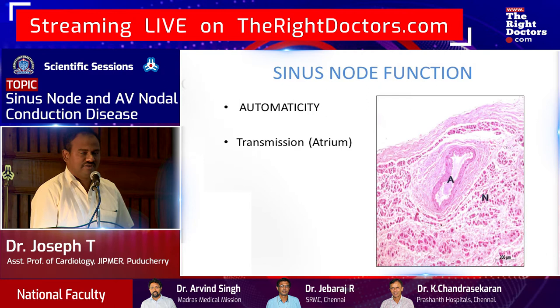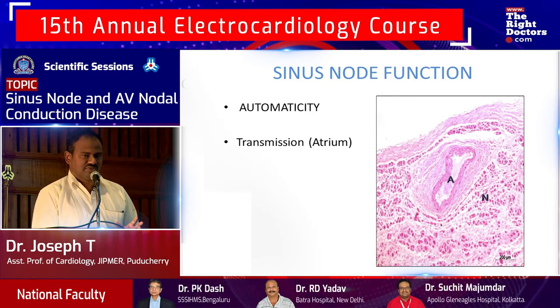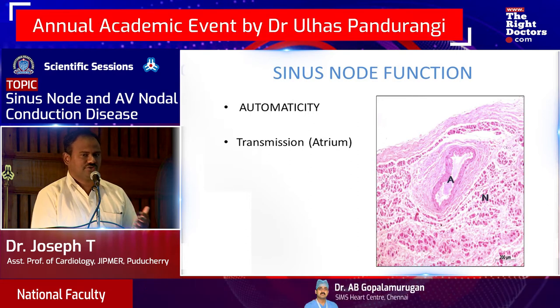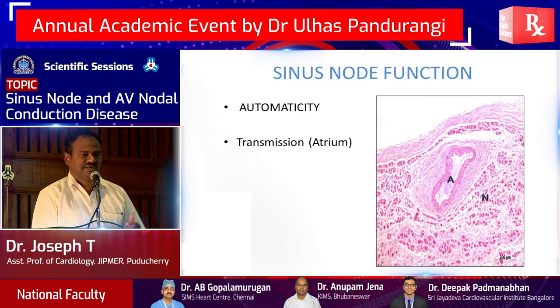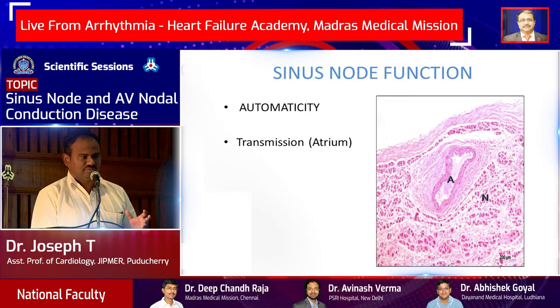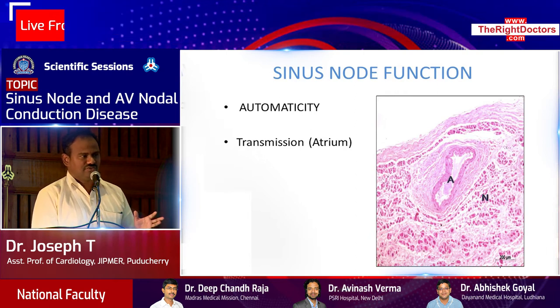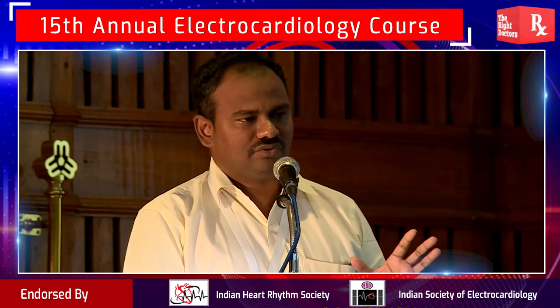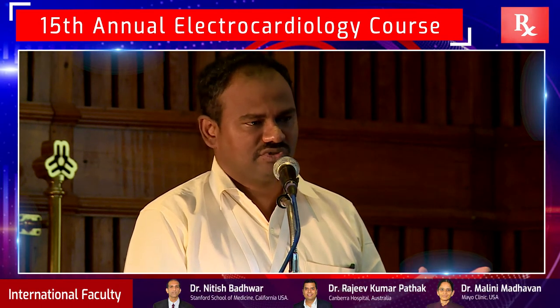The functions of the AV node include automaticity — generating the impulse — and transmitting the impulse from the AV node into the atrial tissues so it goes to the AV node and conducts down. It is under immense control of autonomic neural tissues. AV node conduction is almost represented by the PR interval on your surface ECG. For practical purposes, AV node conduction equals PR interval.